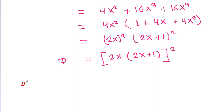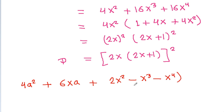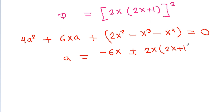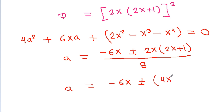The polynomial 4a² + 6xa + 2x² − x³ − x⁴ = 0. Using a = (−b ± √D) / 2a, we get a = (−6x ± 2x(2x+1)) / 8, which gives a = (−6x ± (4x² + 2x)) / 8.